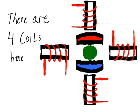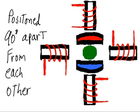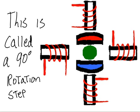There are four coils here. With respect to the rotor, they are positioned 90 degrees apart from each other. This is called a 90 degree rotation step.